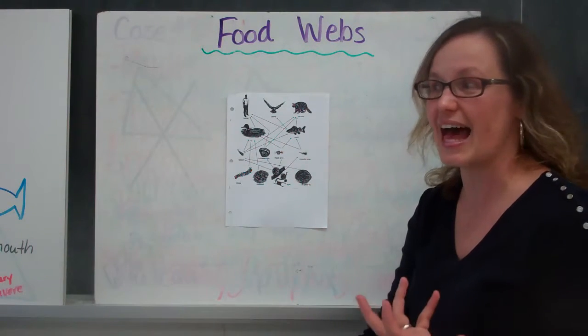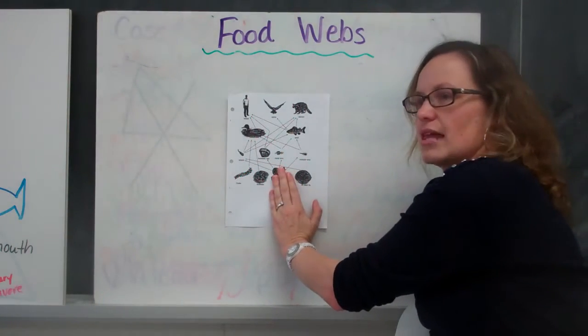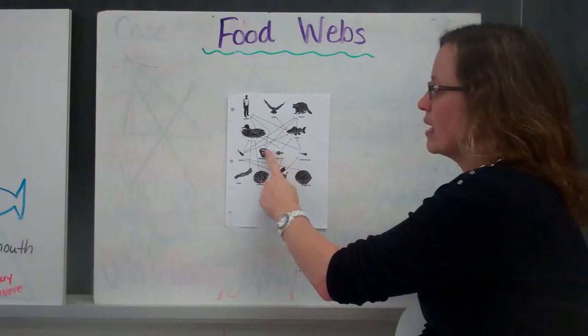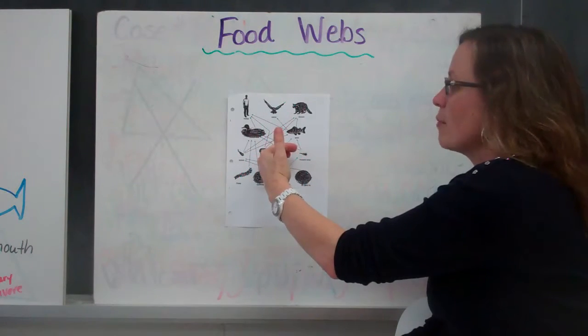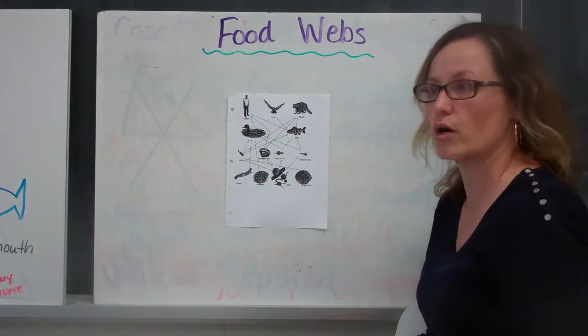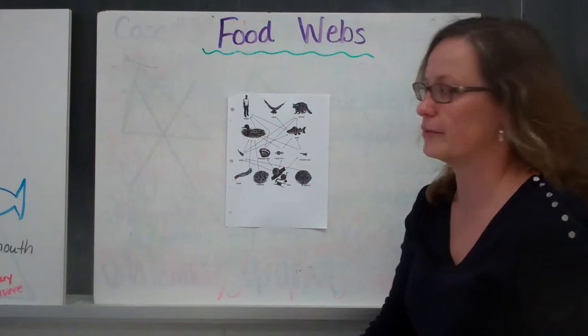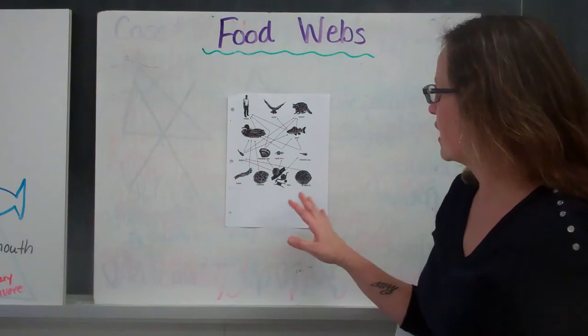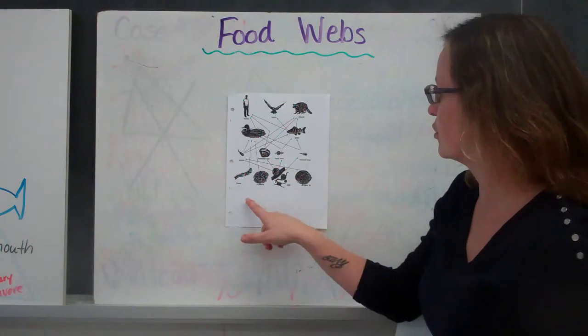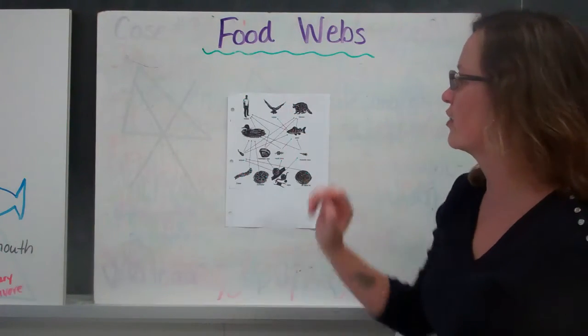Which again is that importance of balance, where if we eliminate that one producer, how many consumers are affected? And how many primary carnivores and secondary carnivores are ultimately affected by that change in the flow of energy? And you can follow the path, so it goes from your producer and ends with our carnivore.